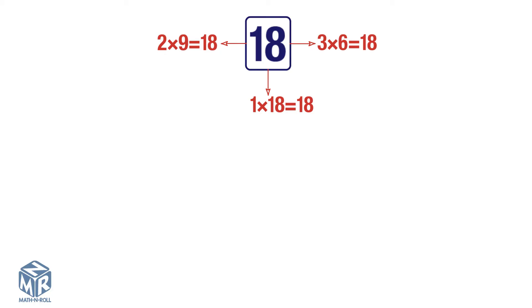Two factors that make a product are sometimes called a factor pair. 18 has 3 factor pairs.